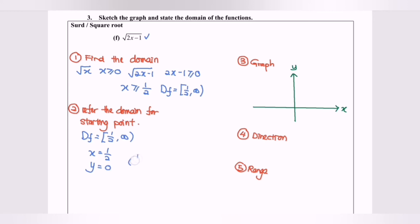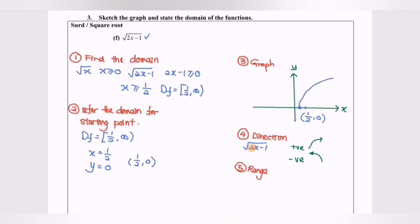So the starting point is (1/2, 0). On the graph, one-half is located around here, and we mark the point (1/2, 0). Step four: since the coefficient of x is positive 2, the graph will go towards the right, giving us the graph of y = √(2x − 1).